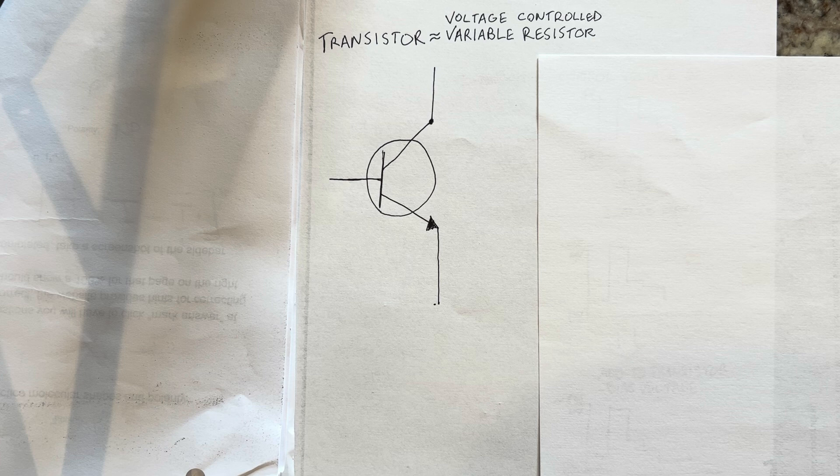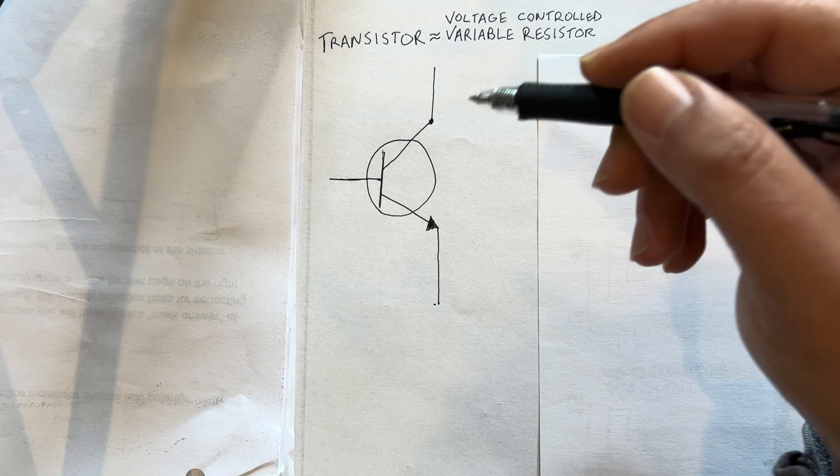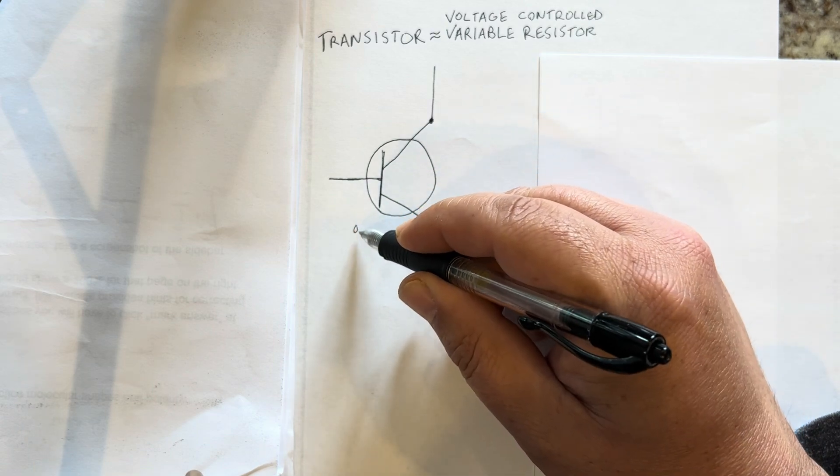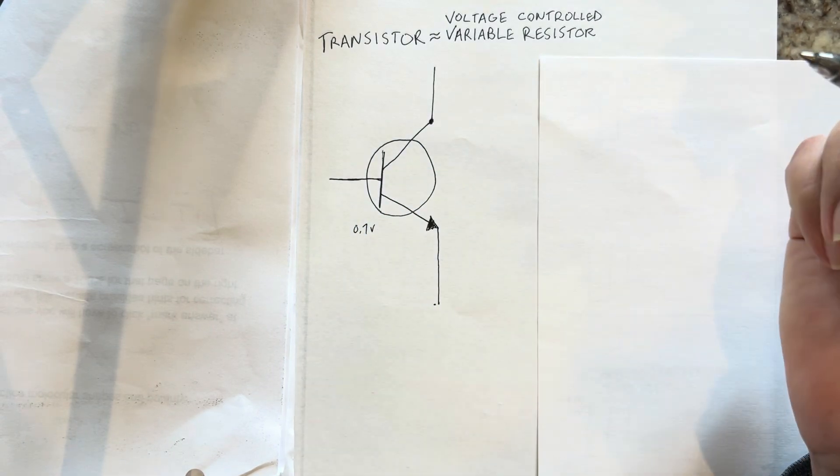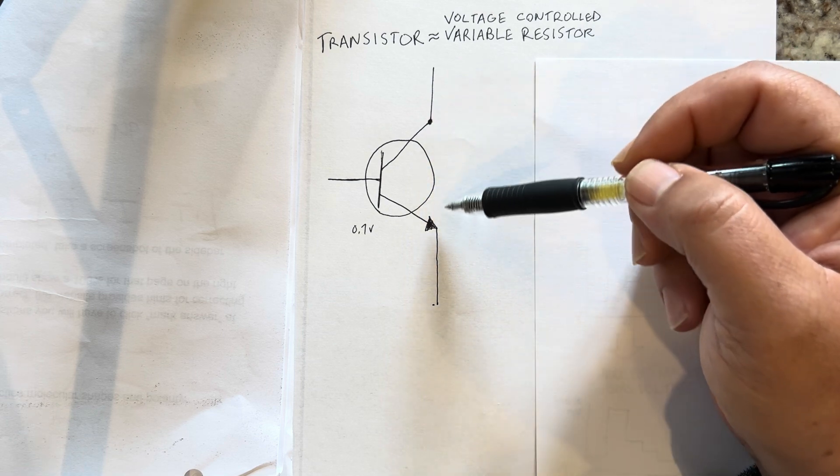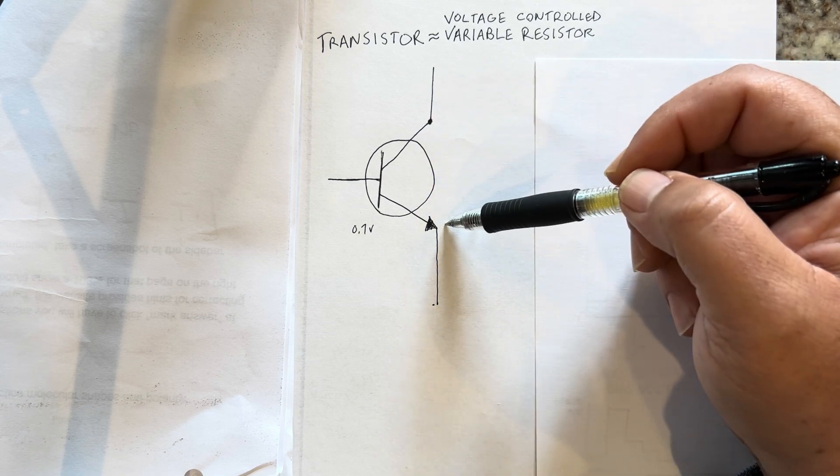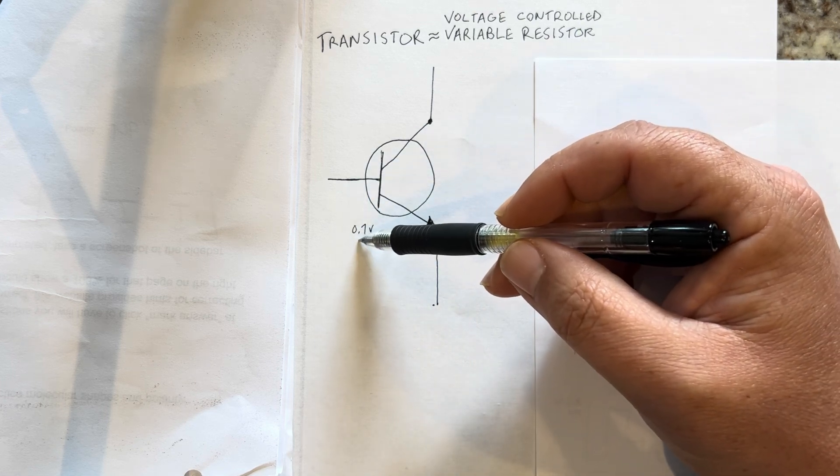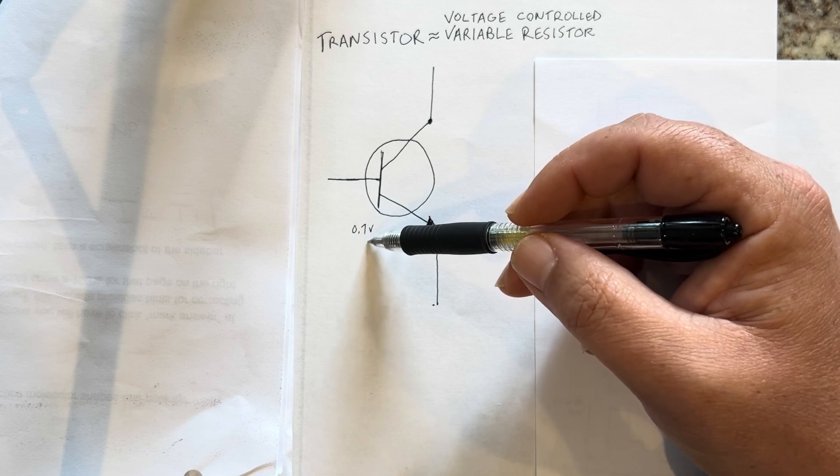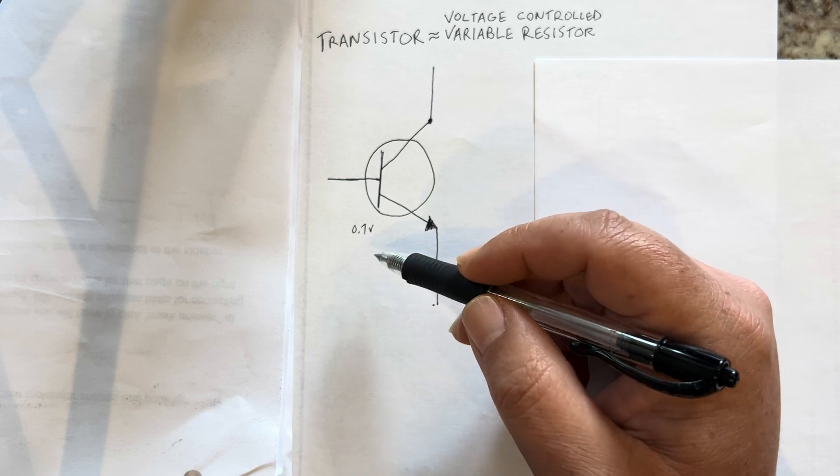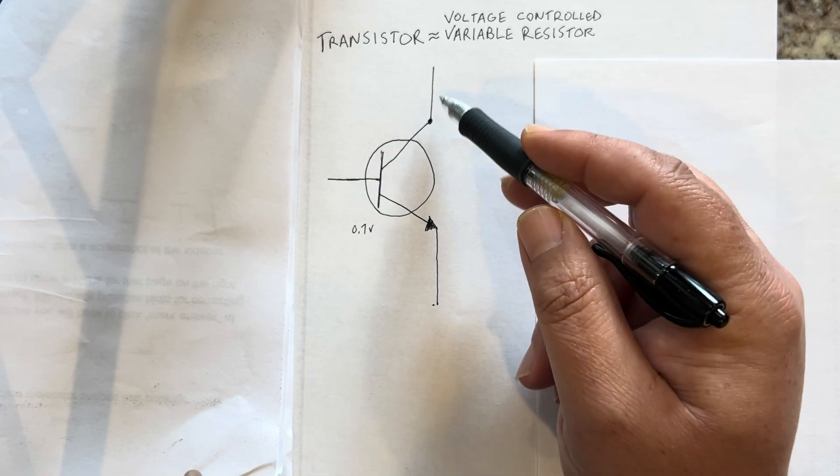A little known property of the transistor besides the fact that it's a switch is that if you apply 0.7 volts to an NPN transistor, it turns on and it turns on the flow of current from collector to emitter. But if you go below the 0.7 volts, the transistor functions as a current limiting resistor.